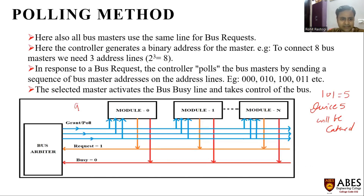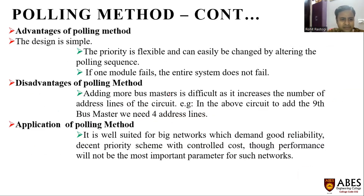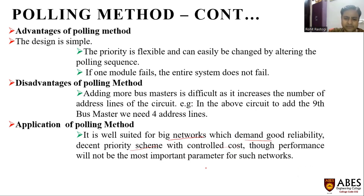The number nine in binary is 1001, so four address lines are required. Up to 9 to 15 devices require four address lines, and from 16 to 31 devices five address lines are needed. So even for 16 modules, five address lines are required, making it somewhat costly. The application of the polling method is that it is suited for big networks requiring good reliability and a decent priority scheme with controlled cost, where performance is not the most critical parameter.